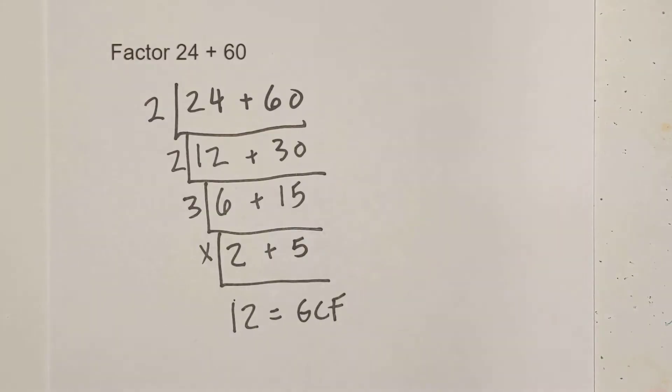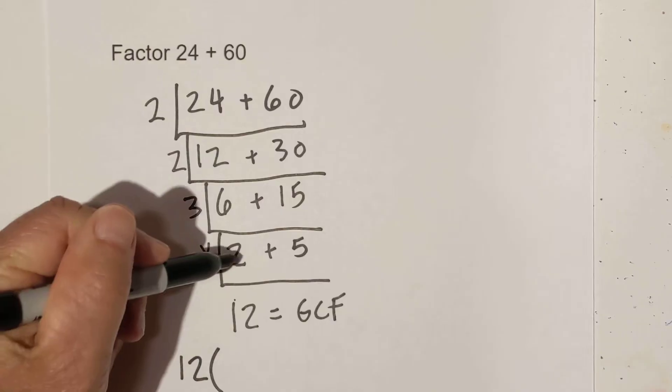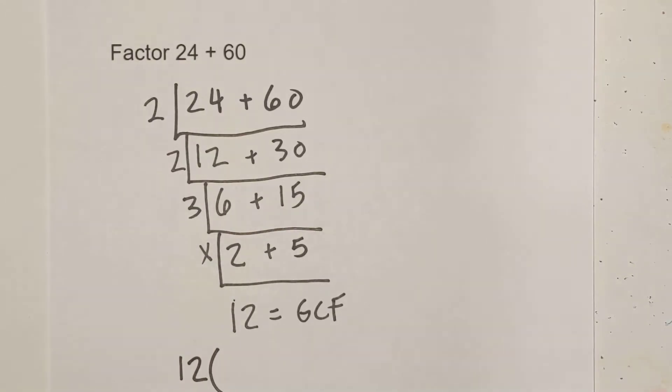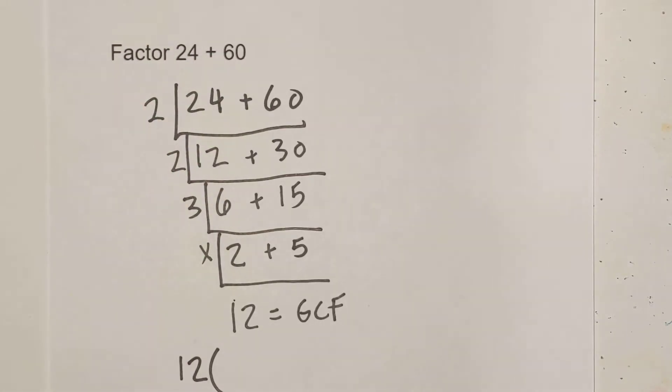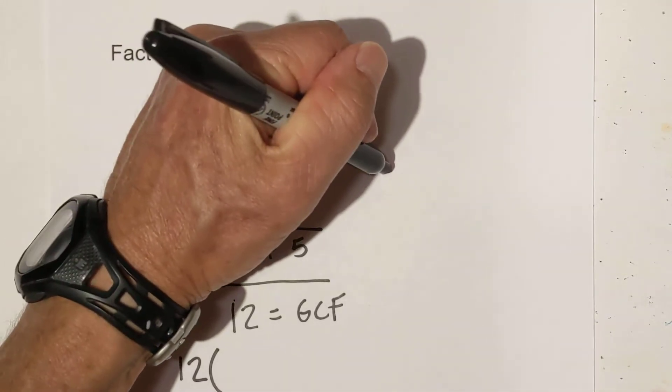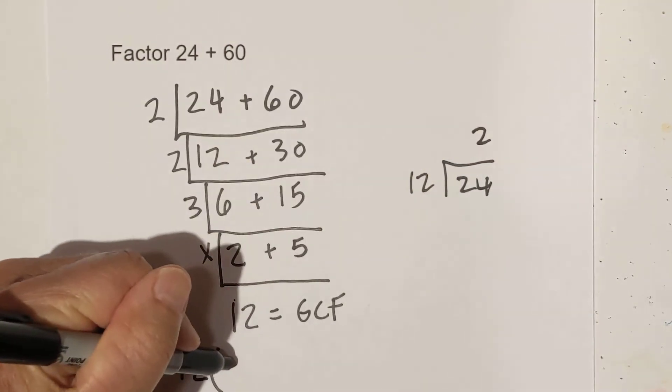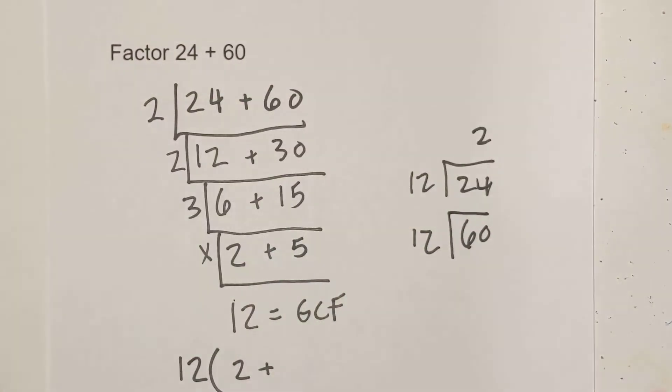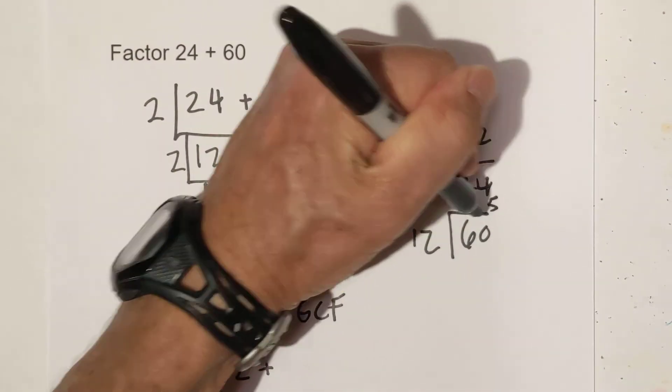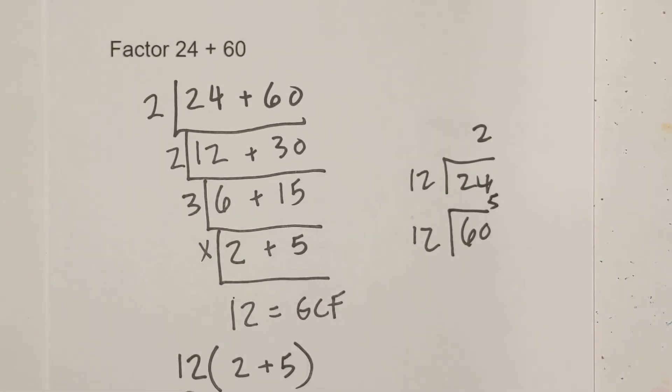Now what we can do is let's draw parentheses. We can just write these two numbers in. But let's make sure 12 goes into, where am I going to write this? Let's write this right over here. 12 goes into 24 two times. And 12 goes into 60 five times. Five times 12 is 60. So that's how we get the two numbers inside the parentheses.